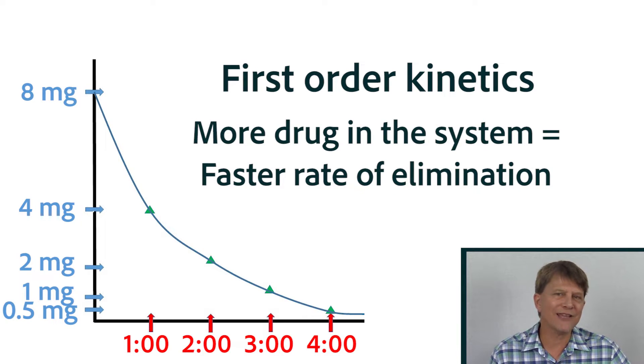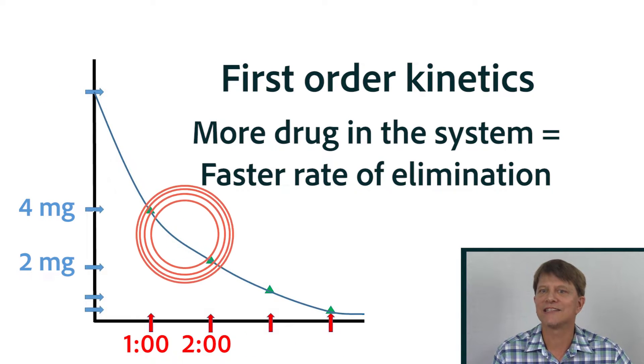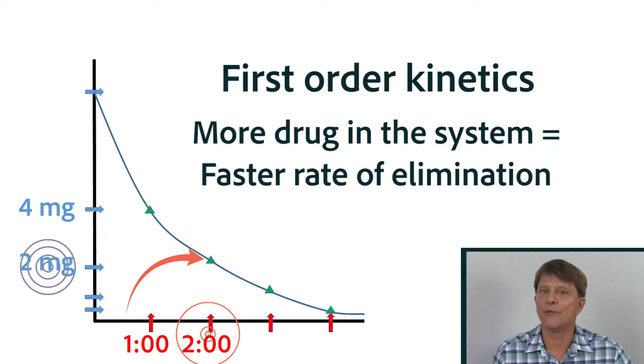meaning that your calculations basically start over at 1 o'clock, estimating half of the remaining amount. So at 2 o'clock, you would have 2 milligrams of the drug remaining in your system.